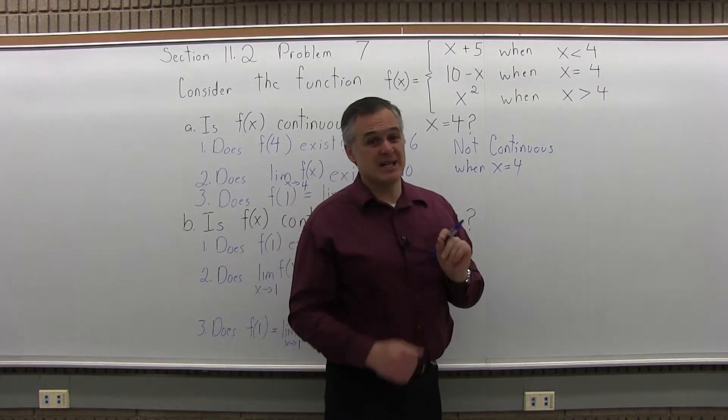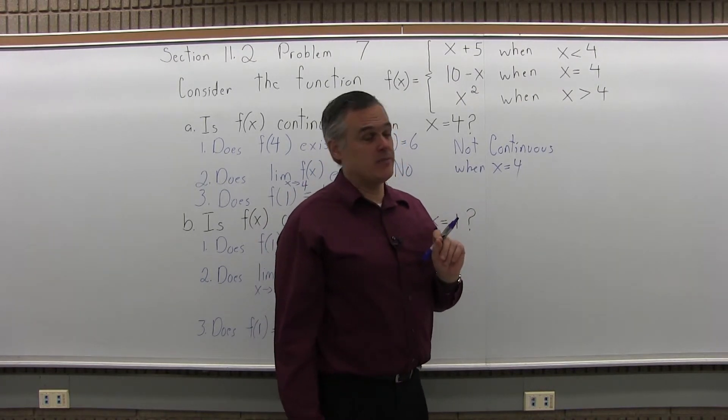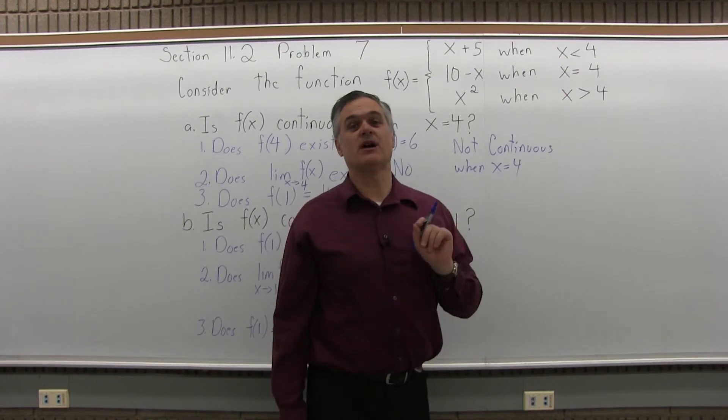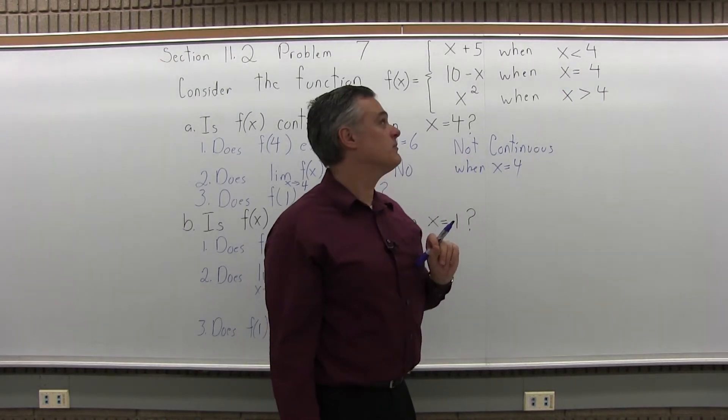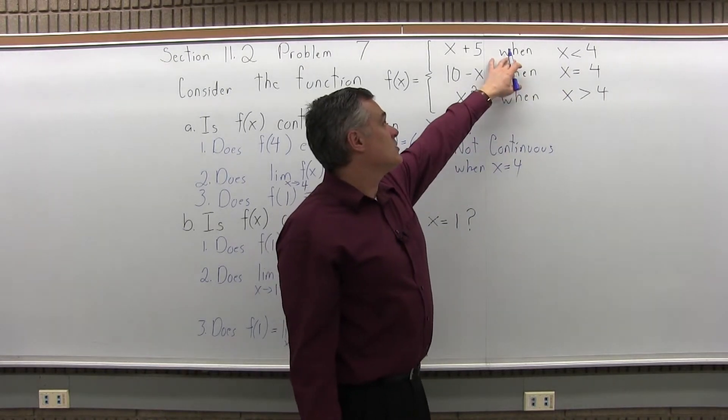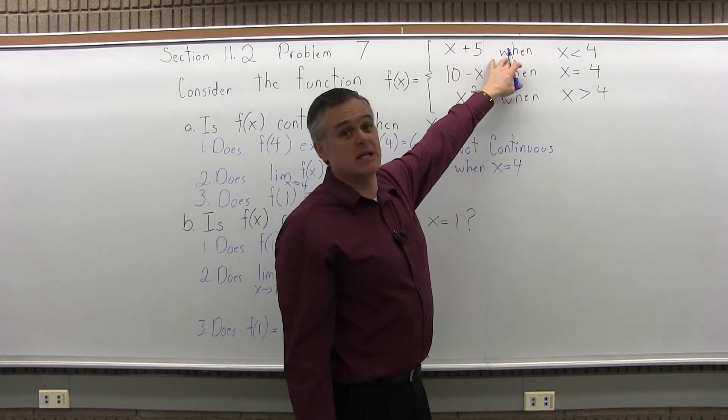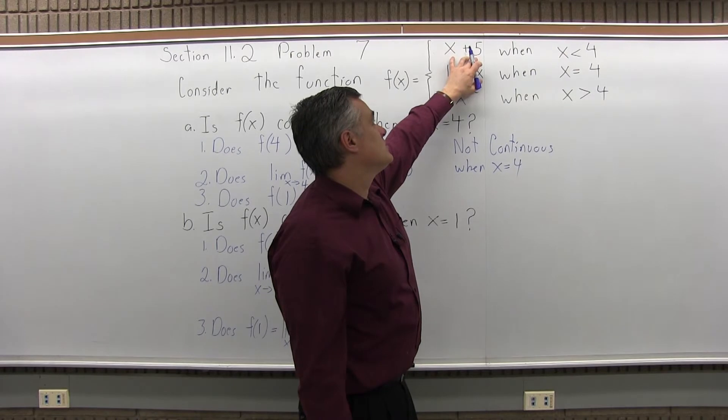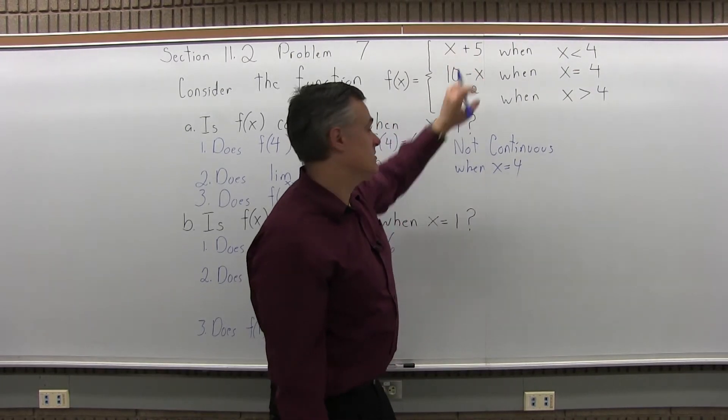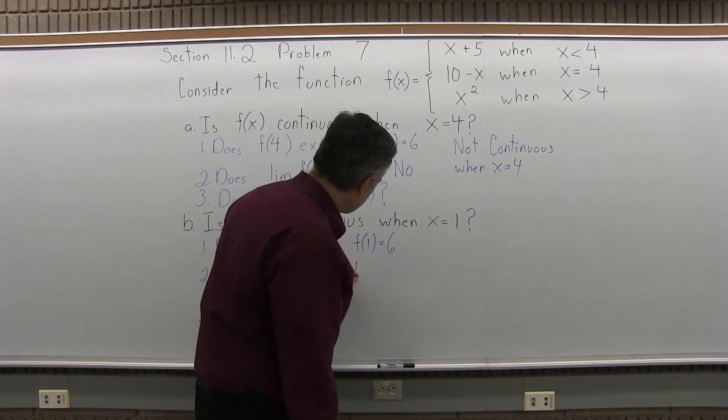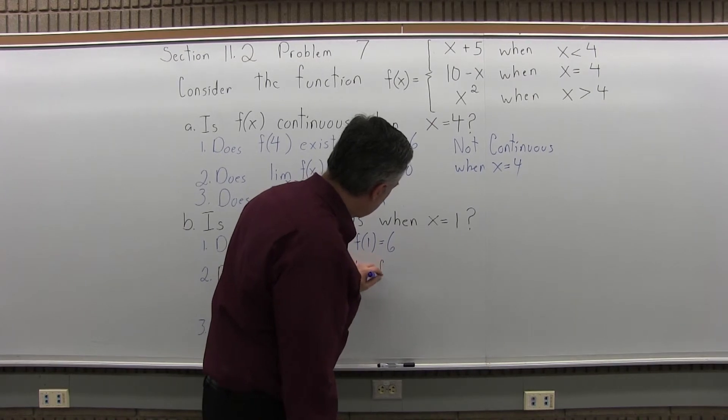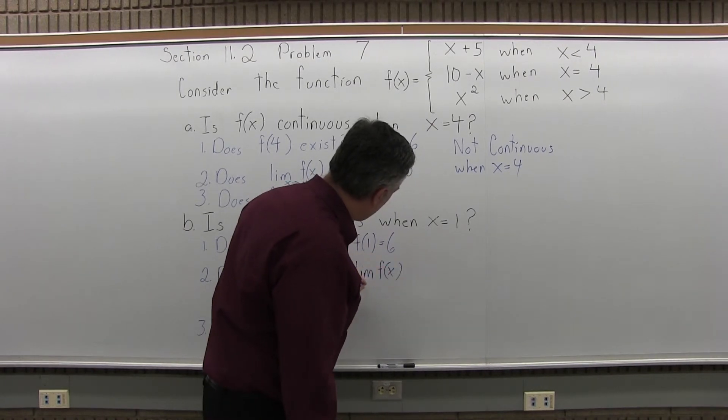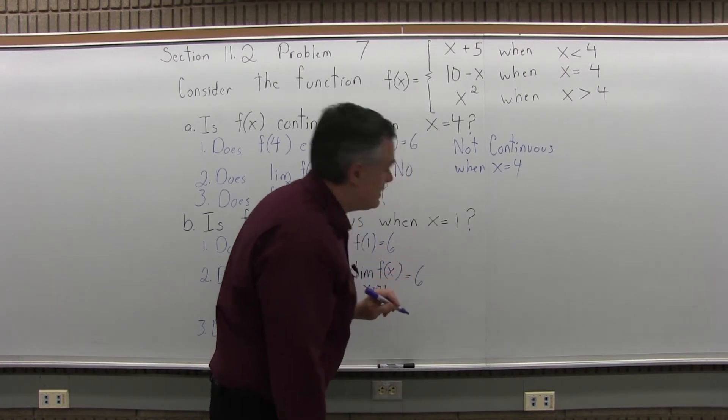That can all be done in the top branch, and for both slightly bigger and slightly smaller than 1, the output's going to get closer and closer to 1 plus 5 or 6. So the limit of this function as the input approaches 1 is also equal to 6.